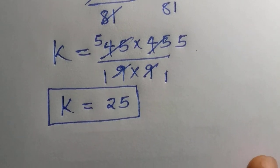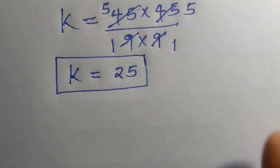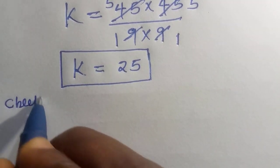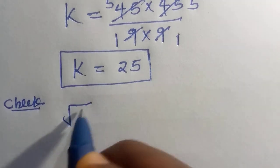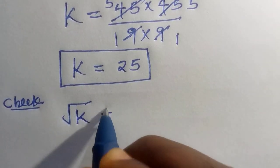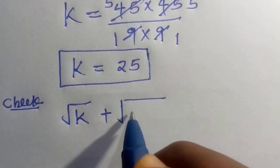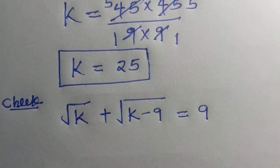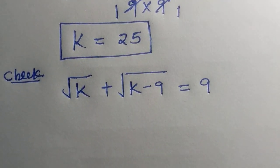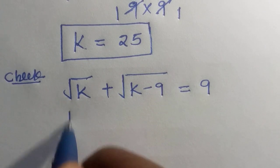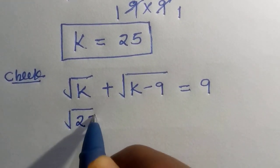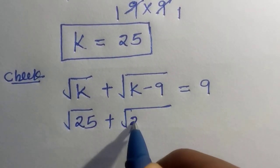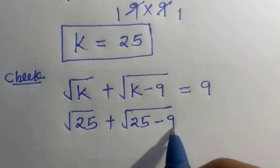And we try to verify from what we are given. The question says square root of k plus square root of k minus 9 equals 9. And we try to input the values as root 25 plus root 25 minus 9.